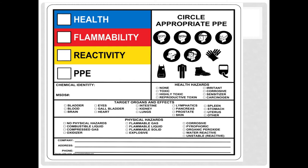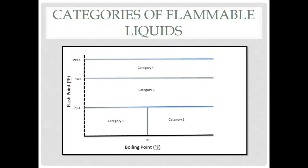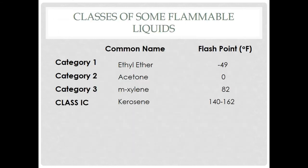For example, you cannot use water on certain chemical fires because water will disintegrate into hydrogen and oxygen, which will cause the fire to grow. Instead, dry chemical powder, CO2, or foam should be used to extinguish these fires by forming a layer that cuts off oxygen.